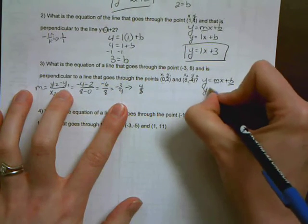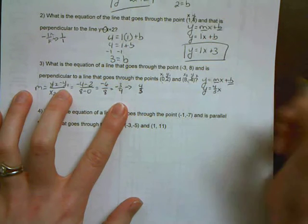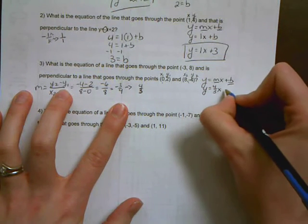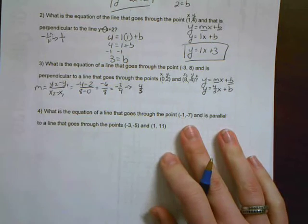Okay? So that means what I know now is that the slope of my ultimate answer is going to be y equals four-thirds x, and then plus b.